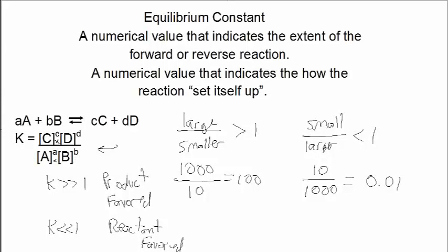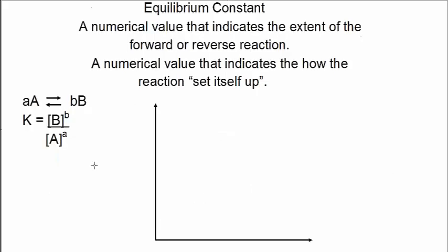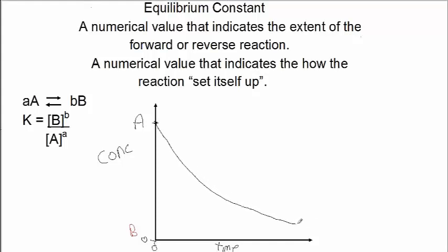I'd like to further reinforce these ideas using a graph. Here I show a very simple reaction: A producing product B in equilibrium. To the right of that I have a coordinate axis. On the y-axis I'll label it concentration, and on the x-axis I'll label it time. We'll mark T0 and zero concentration, and start off at the beginning of the experiment with A at some concentration and B at zero concentration. As the reaction proceeds, A will decrease over time, and B will increase.